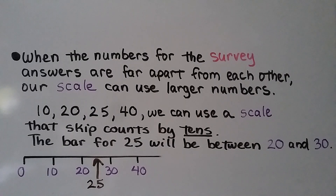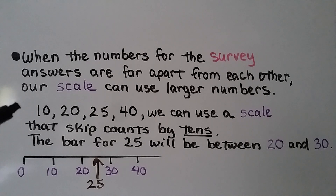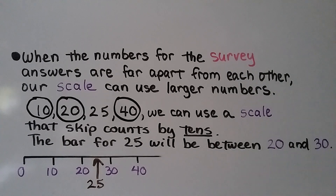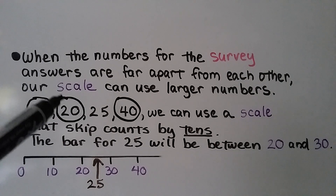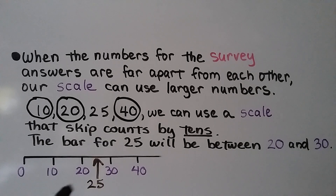When the numbers for the survey answers are far apart from each other, our scale can use larger numbers. If we have numbers like 10, 20, 25, and 40, we can use a scale that skip counts by tens: 10, 20, 30, 40. The bar for twenty-five would fall in between the twenty and the thirty.